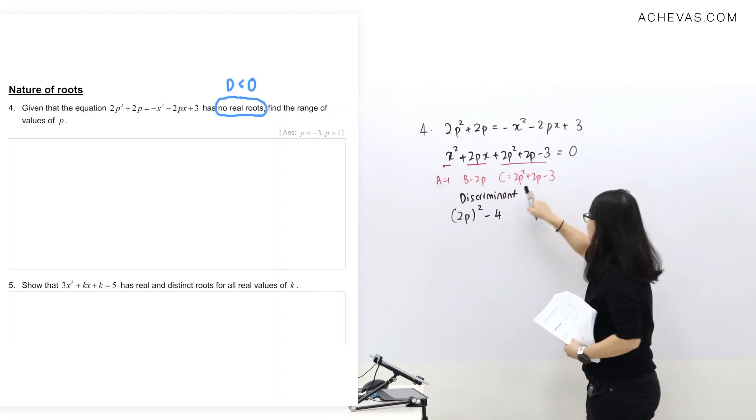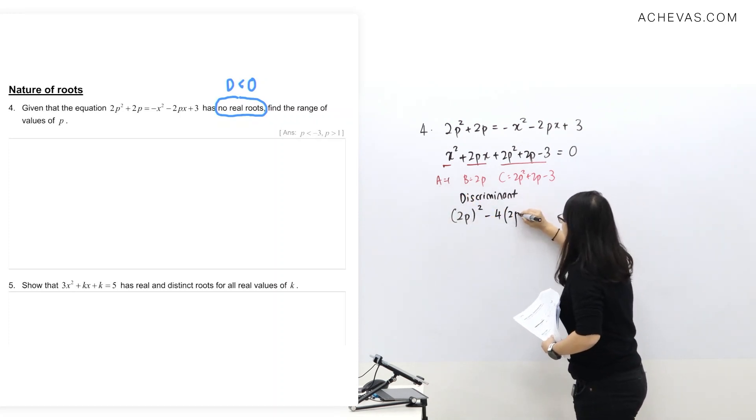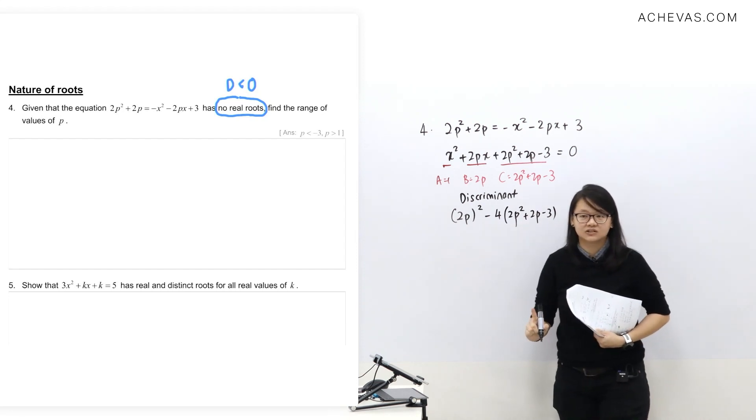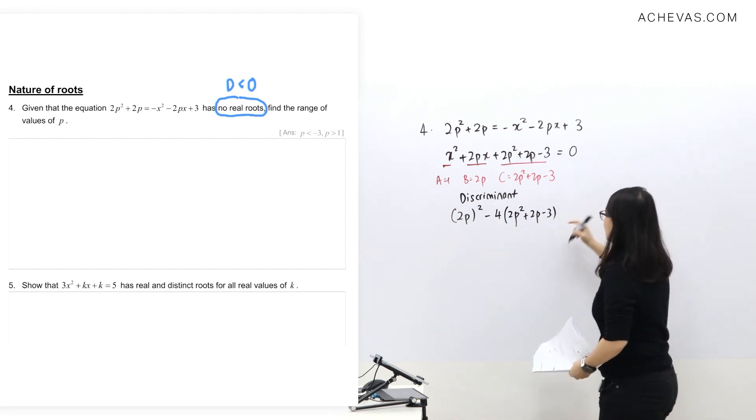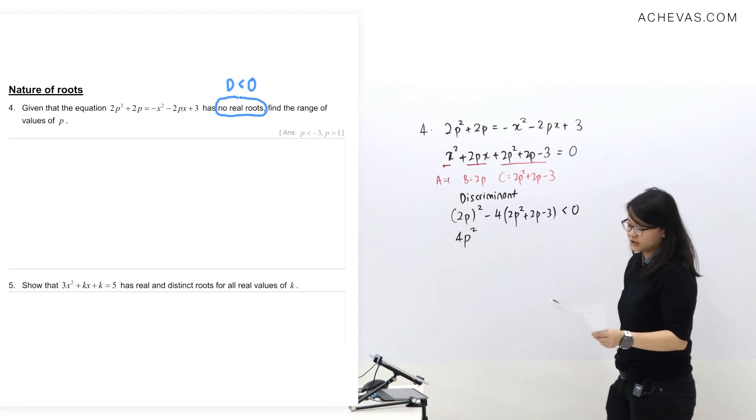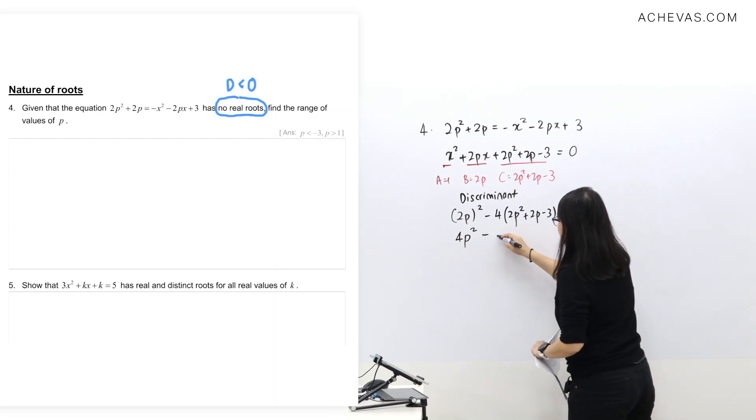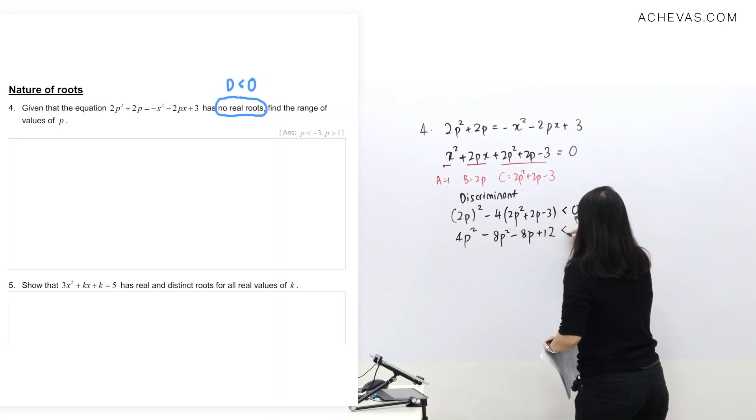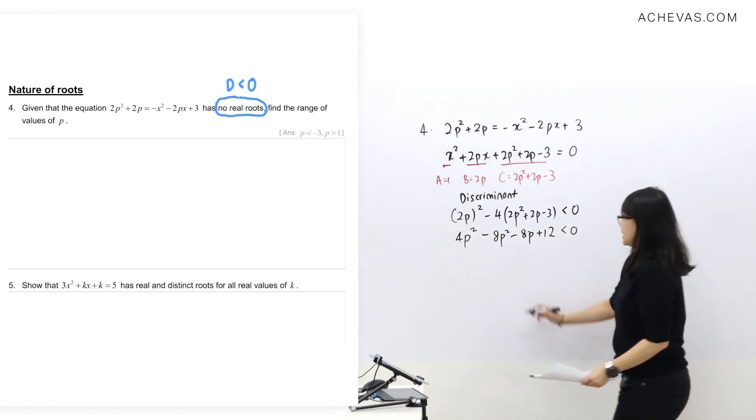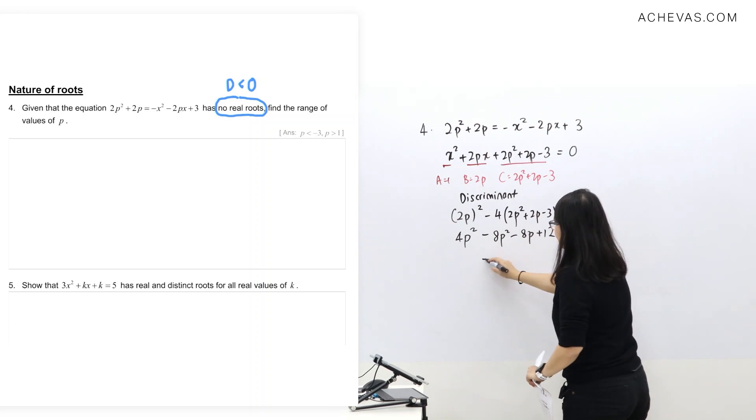If you put a one here, this negative is very far from here. Very high chance that students forgot about the negative. So discriminant less than zero. Now we do squaring both, also very important. Expansion. Then minusing like terms.